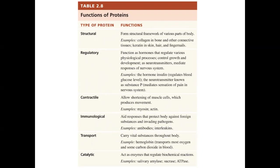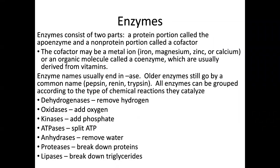Listed here are the six functional types of proteins. The last thing we were talking about the other day were the catalytic proteins called enzymes. We talked about how enzymes work as far as lowering the activation energy. Enzymes consist of two parts: a protein portion called the APO enzyme, but it's not entirely protein — it also has a non-protein portion called a cofactor.